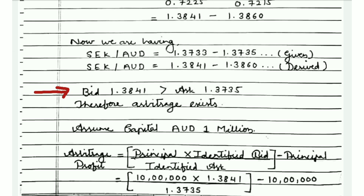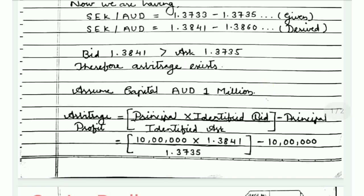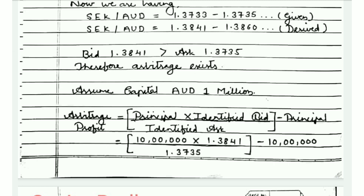Since the derived bid of 1.3841 is greater than the given ask of 1.3735, arbitrage exists. We assume a capital of AUD 1 million. The arbitrage profit formula is: Principal × (identified bid ÷ identified ask) − Principal. Substituting: 1,000,000 × (1.3841 ÷ 1.3735) − 1,000,000.